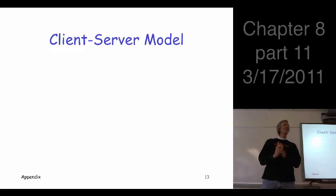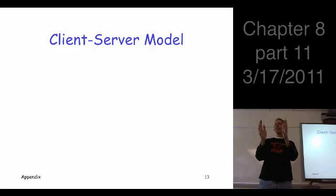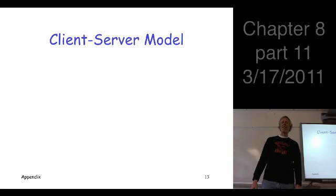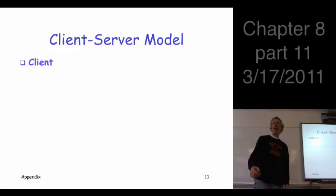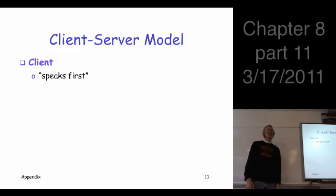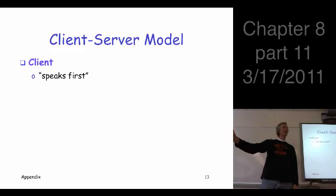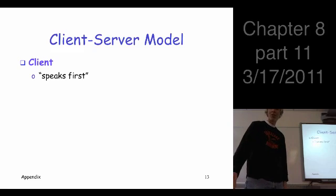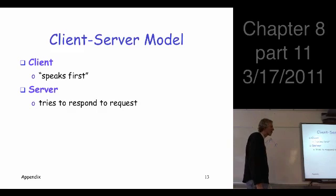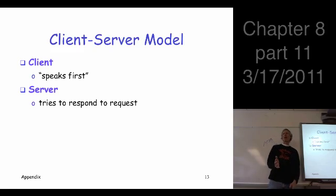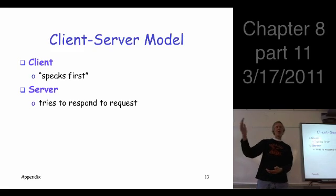Typically in the client-server model we can clearly identify one as the client and one as the server. Suppose you're browsing the web — who's the client, who's the server? My web browser is the client, the server is the server. The client speaks first — the client is the one making the request, requesting some resource from the server. And then the server is the one who's there to respond or fulfill the request. Think about the web browser: you're making the request, the server is trying to provide that information.